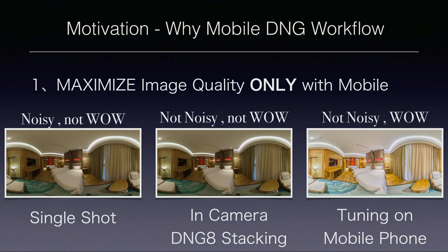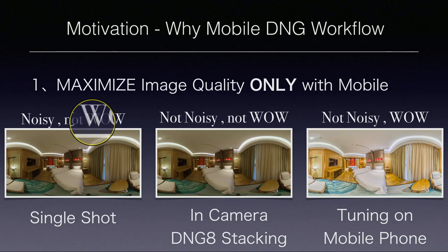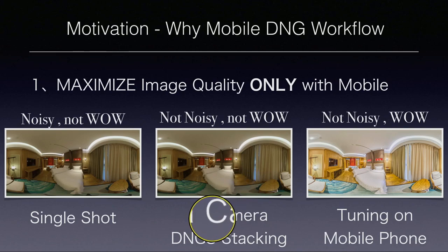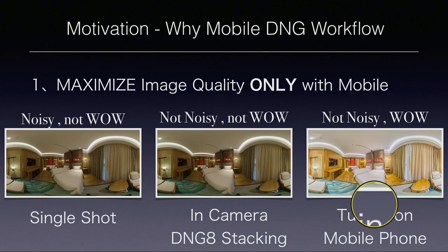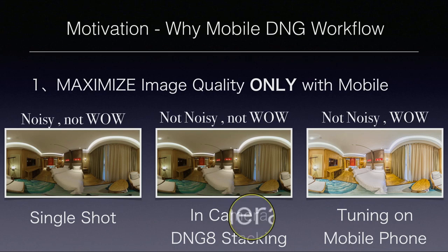I want to maximize imaging quality only with mobile. A single shot in photo mode is noisy because the sensor is so small and light conditions aren't ideal. In-camera DNG8 stacking via Express DNG8 helps reduce noise, but I'm not satisfied with the in-camera photo reproduction. My result after fine-tuning on a mobile phone is a stunning photo that is not noisy — that's what I want from the camera and mobile phone combined.